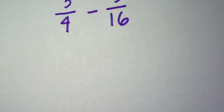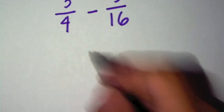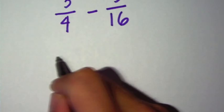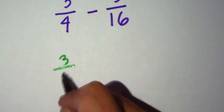Now the first thing I want to do is I'm going to stack up these problems. So I'm going to write 3 over 4 minus 3 over 16.